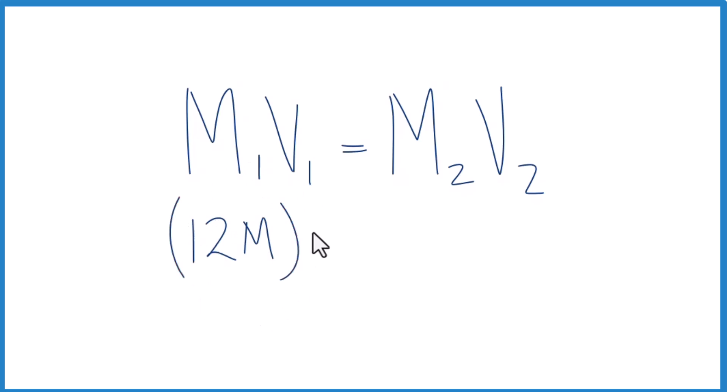You multiply that by V1, that's how much we need to add to our volumetric flask. And then we wanted to make a three molar solution. And let's just say we want to make 500 milliliters of that.